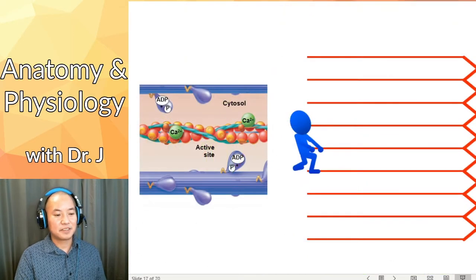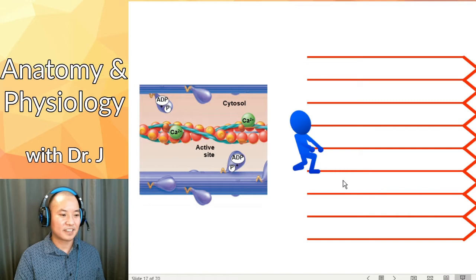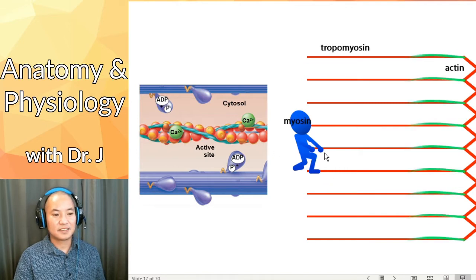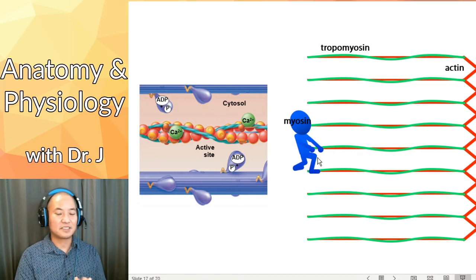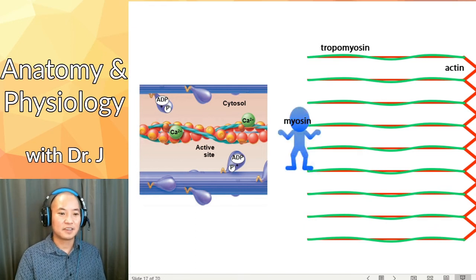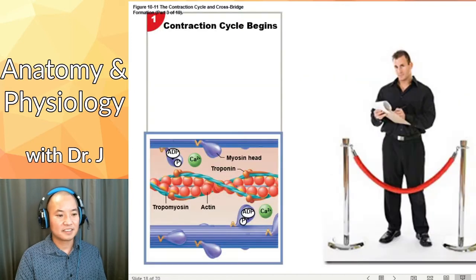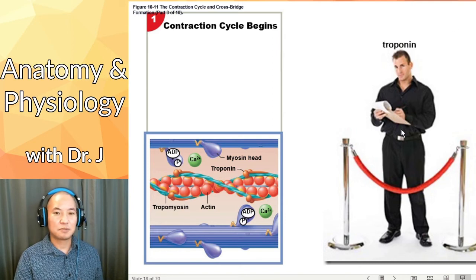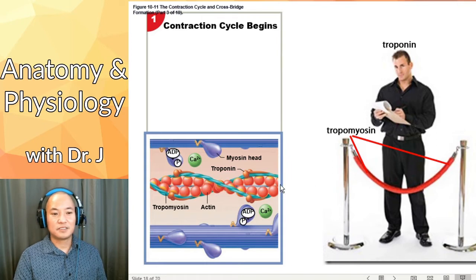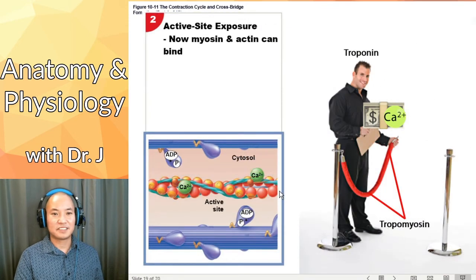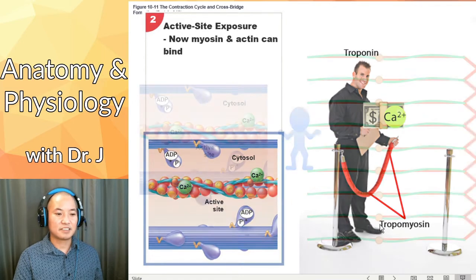Here we have a cartoon of a myosin head, and here are the thin filaments made up mostly of actin. When the muscle is at rest, tropomyosin wraps around actin, so myosin is unable to grab onto actin because tropomyosin is blocking what they call the active sites of actin. To get tropomyosin out of the way, troponin comes in. Troponin is like the bouncer and tropomyosin is like the velvet rope — you pay the bouncer off with calcium. When troponin has calcium, it moves tropomyosin away from the active sites of actin, allowing myosin to bind.